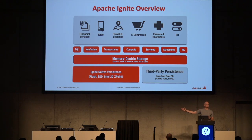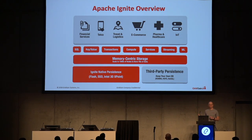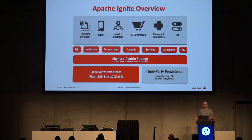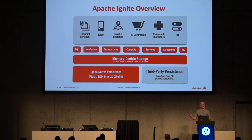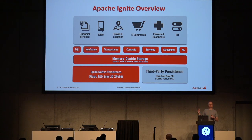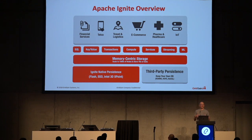Being in-memory is great — it's fast, you can access it very quickly. But what happens when the node goes down or you need to restart? You potentially lose your data. So we have two different ways of keeping that data: Ignite native persistence, and third-party persistence where you can save data into Oracle, Sybase, Postgres, or MySQL. Disk space is much cheaper than memory, so you can store historical data on disk and keep just what you need to process quickly in memory, still accessing it through the same APIs.